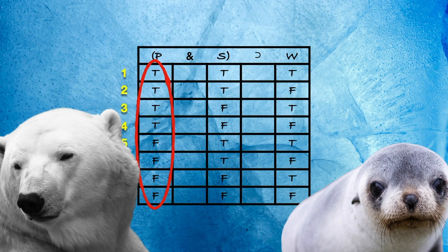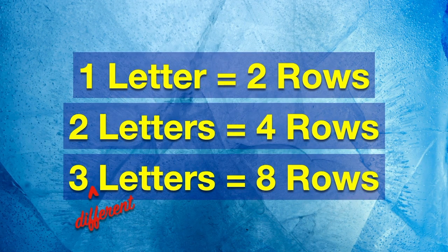I hope you like patterns, because we have another important one here. One letter, two rows. Two different letters, four rows. Three different letters, eight rows. In other words, the number of rows needed increases exponentially with each new letter.